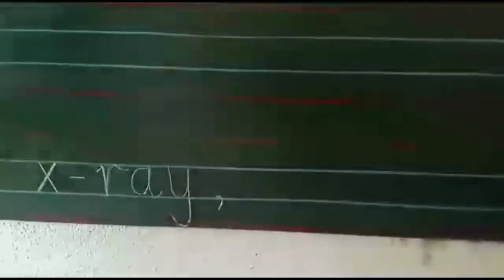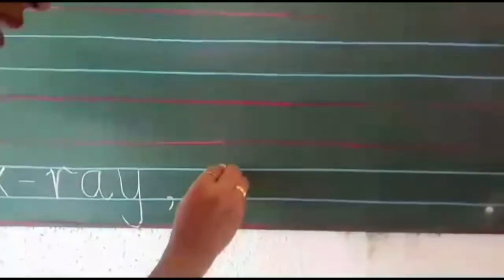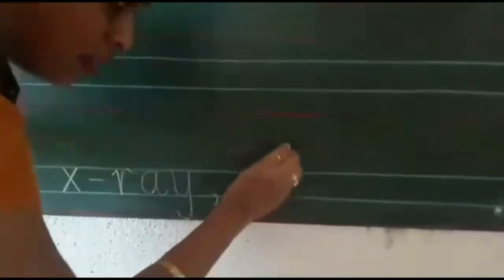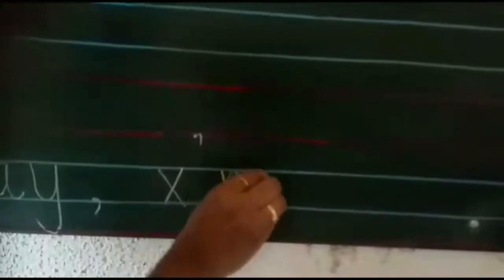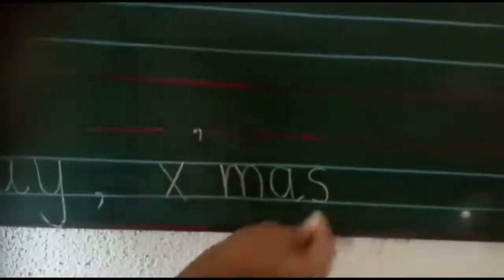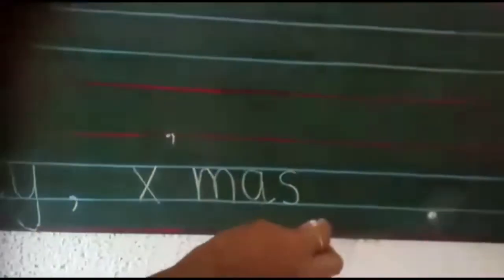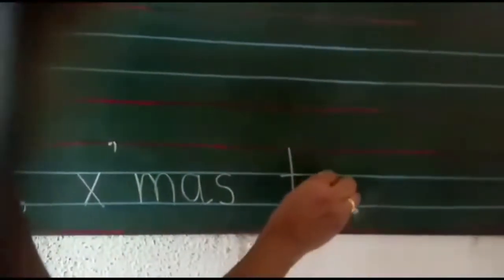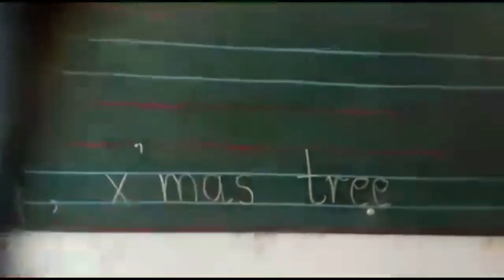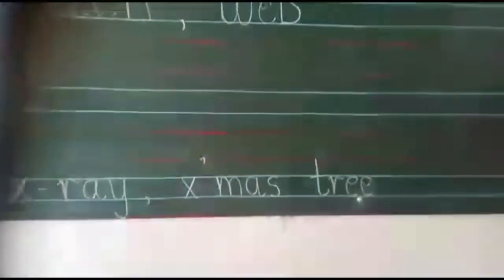Then comma. Xmas tree — leave one finger space, then X apostrophe, M, A, S — Xmas — one finger space — T, R, E, E — tree. Xmas tree. Okay.